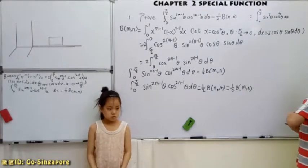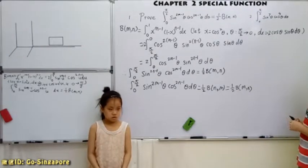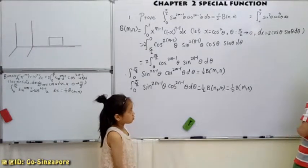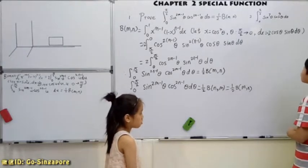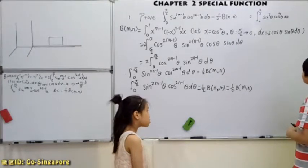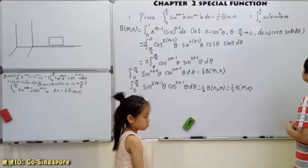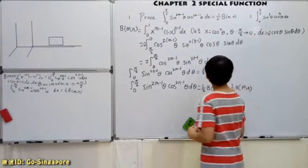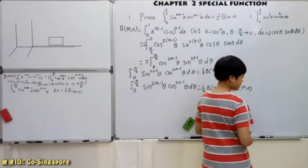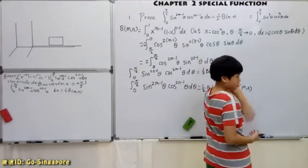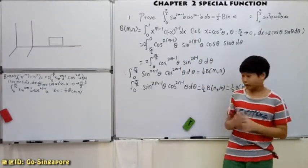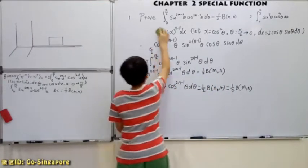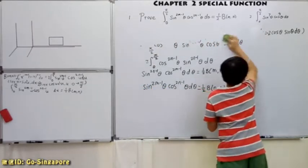Let's try the second question. In this second question, you have integrate from 0 to pi over 2 of sine to the power of 7 theta times cosine to the power of 9 theta, d theta. For this, you just need to use this. Do you want to try?